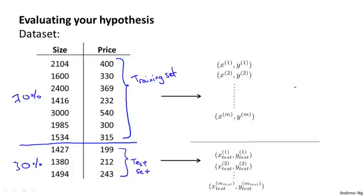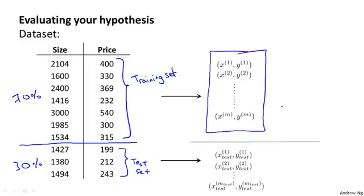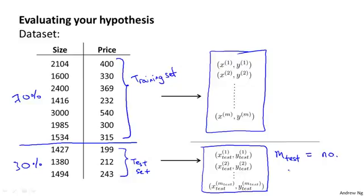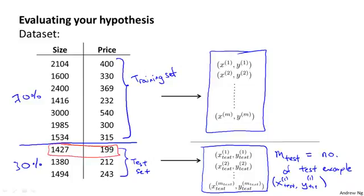If we have some data set, we might assign 70% of the data to be our training set, where m is, as usual, our number of training examples. The remainder of our data is then assigned to become our test set. I'm going to use the notation m subscript test to denote the number of test examples. In general, this subscript test is going to denote examples that come from my test set, so that x1 subscript test, y1 subscript test is my first test example.